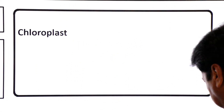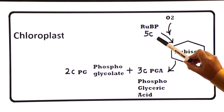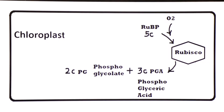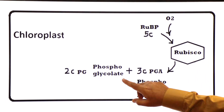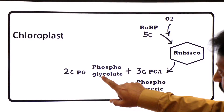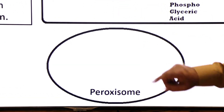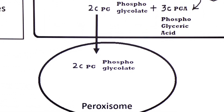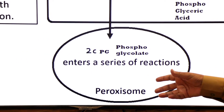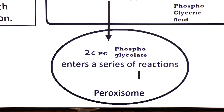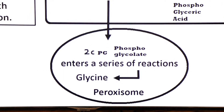The process starts in the chloroplast, where oxygen is added to RuBP, producing two compounds: a 3-carbon PGA (phosphoglyceric acid) and a 2-carbon phosphoglycolate. The phosphoglycolate leaves the chloroplast and enters the peroxisome, where it undergoes a series of reactions and is converted into the amino acid glycine.